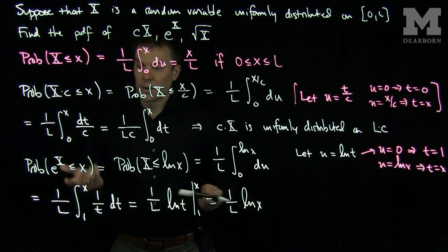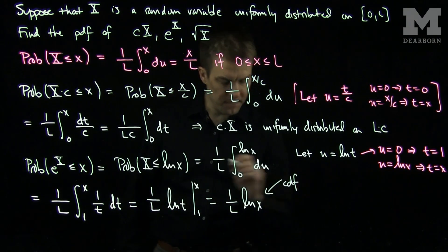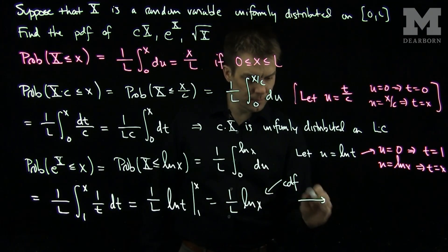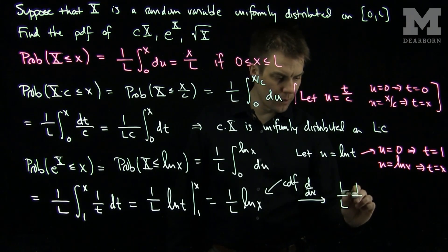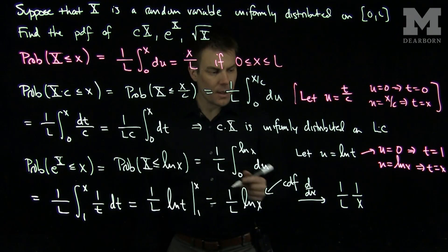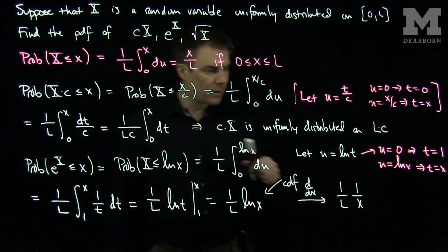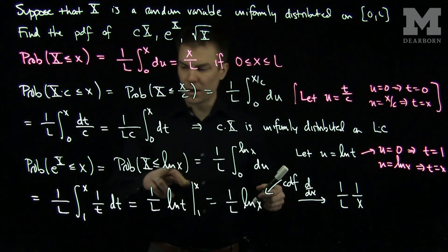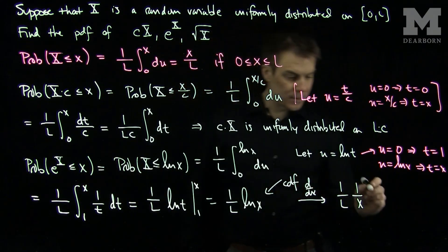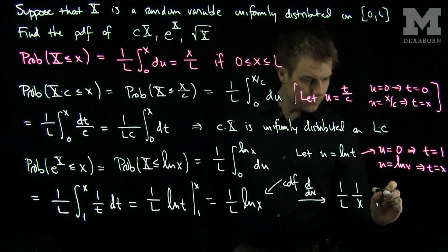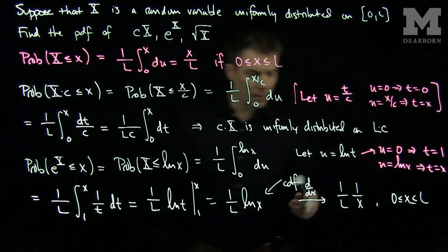So that is our CDF. Differentiating this, we get 1 over L times 1 over x as the PDF. What is the range? We know that x is between 0 and L for the original variable, so the PDF of e to the X is 1/(Lx) for x in the appropriate range.